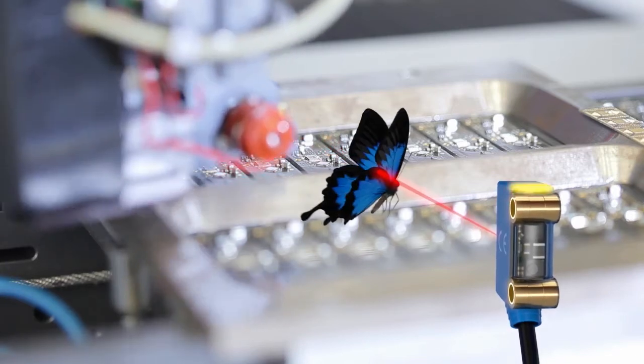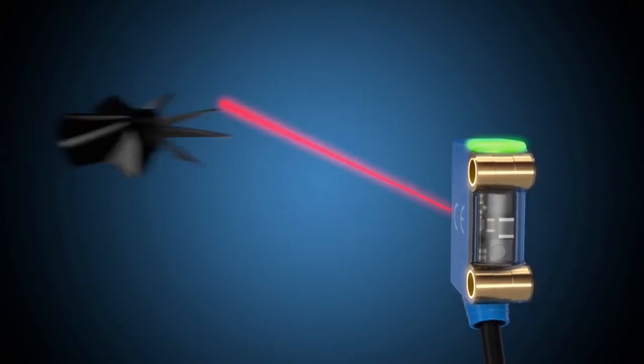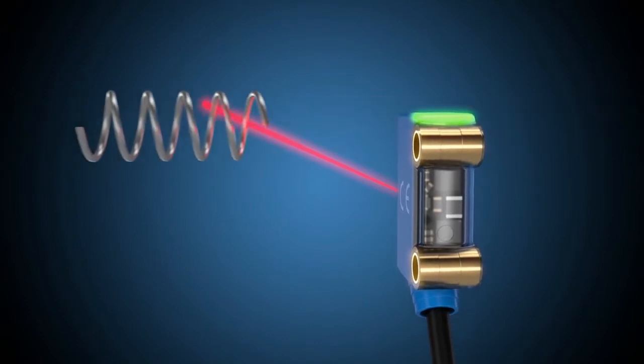Why? Because they detect even the deepest shades of black, enabling them to identify objects of any kind, even if these are reflective or exceptionally thin.